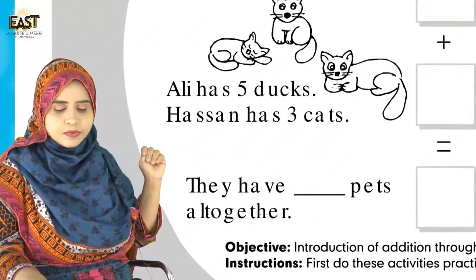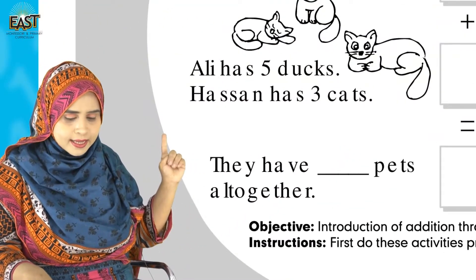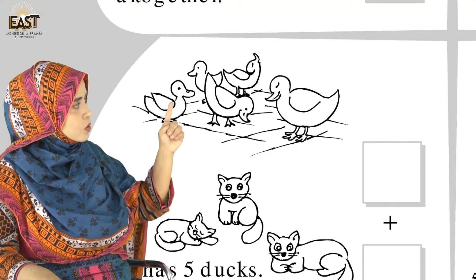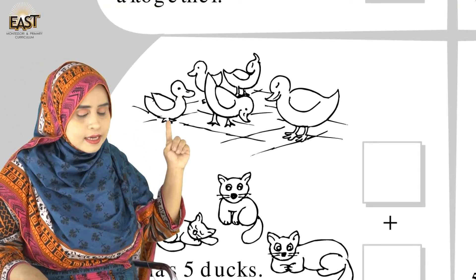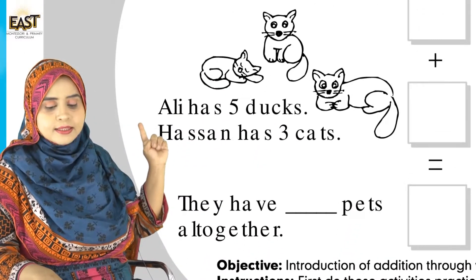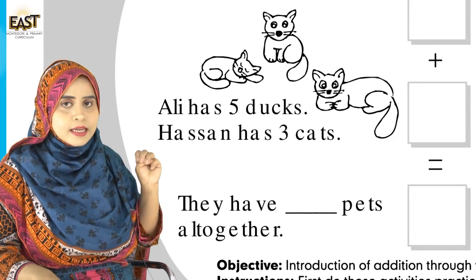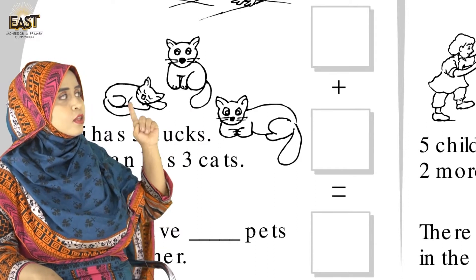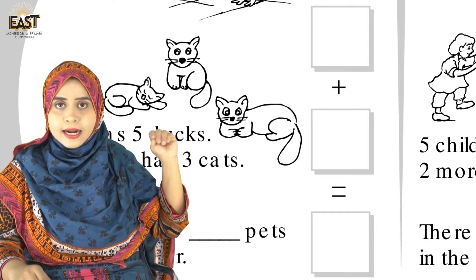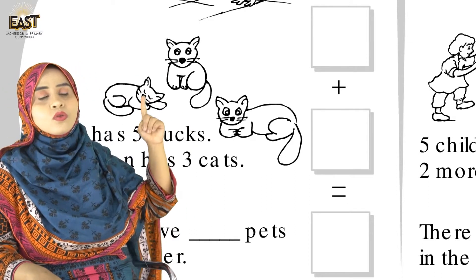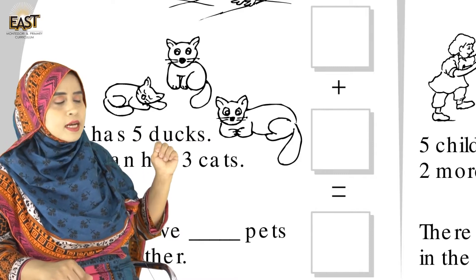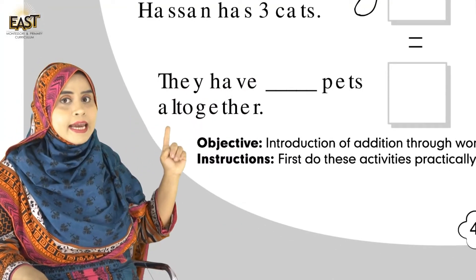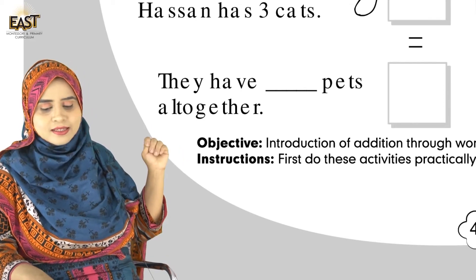Now we move to the next sum. Ali has 5 ducks — count: 1, 2, 3, 4, 5. Yes, 5 ducks Ali ke paas hain. And Hassan has 3 cats. So in the first box we write 5, and in the next box we write 3. We have the add sign. So 5 plus 3: 5, 6, 7, 8 — the answer is 8. They have 8 pets all together.